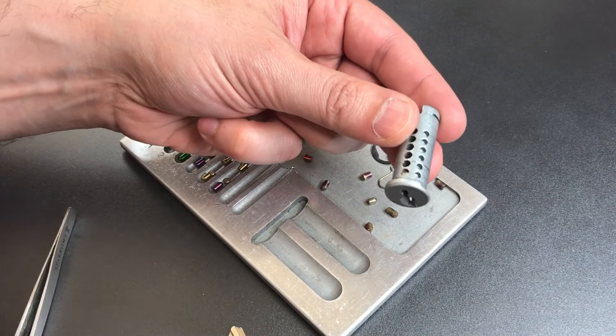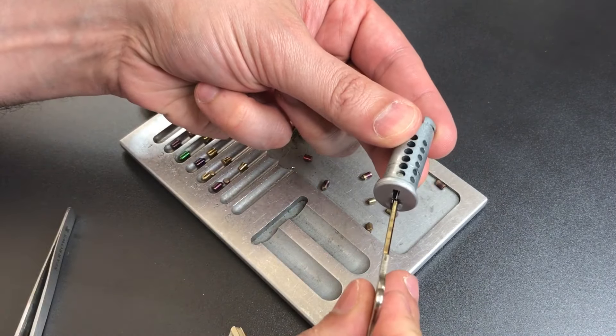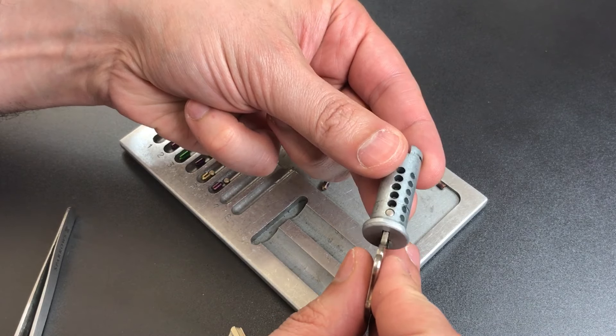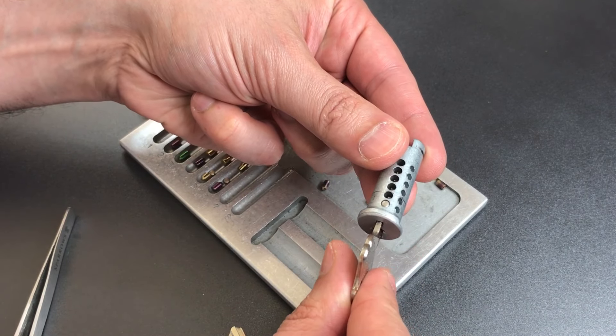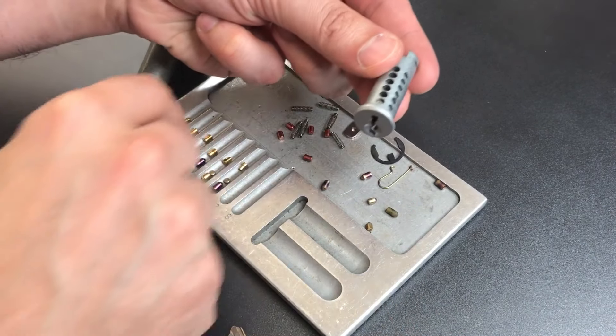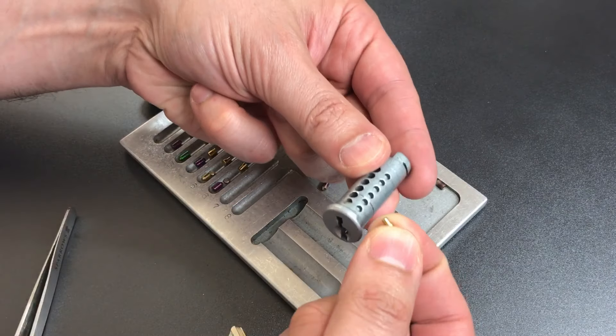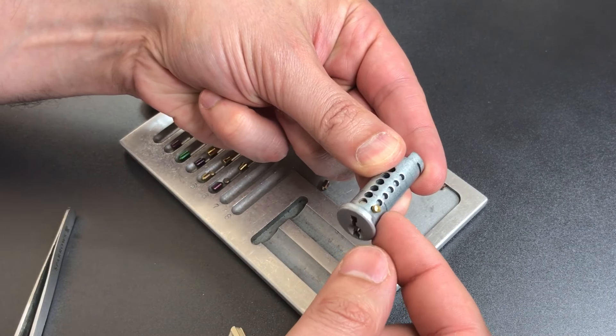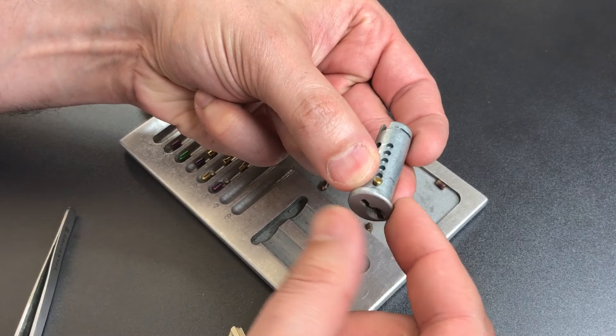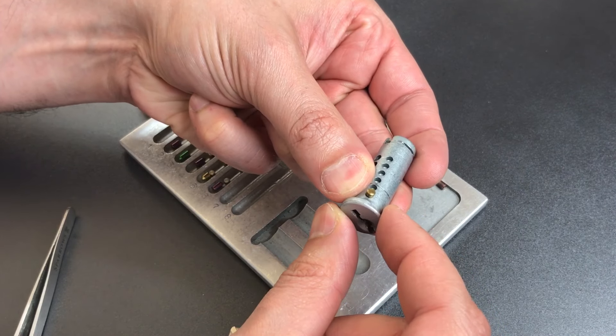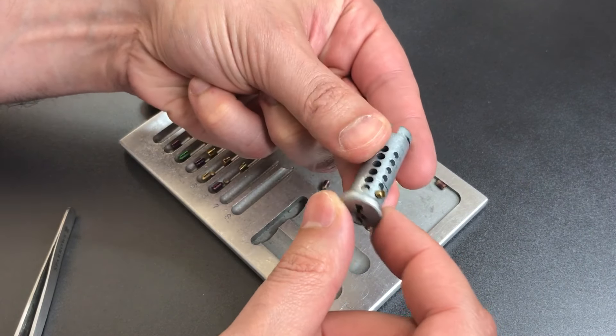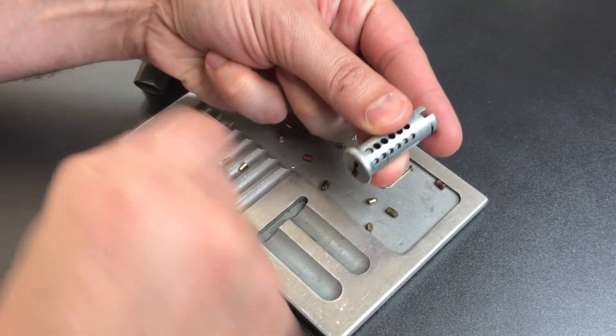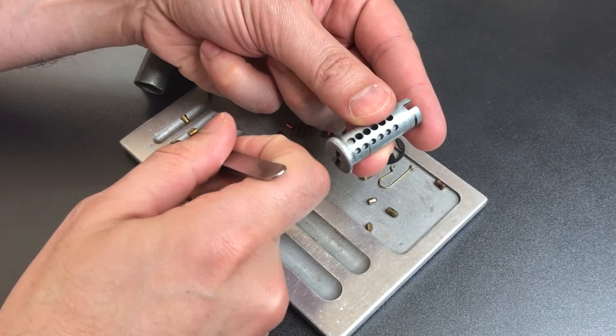However, when you use the old key, you can see that master wafer is below the shear line. Then what happens when you turn the key is the narrow end of this T-pin will fall into the construction keyhole and prevent the core from turning either direction. And that will actually trap the key in place. So let's put the rest of these key pins in here.